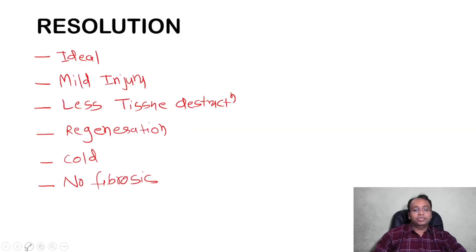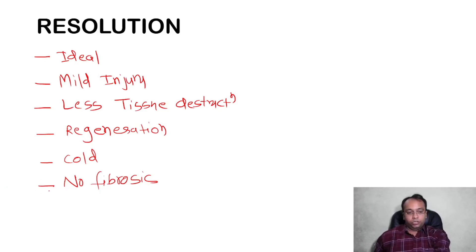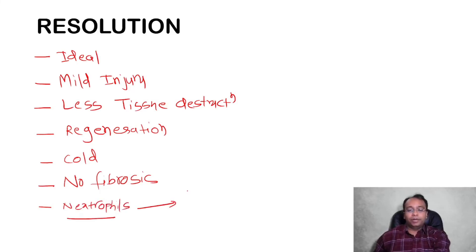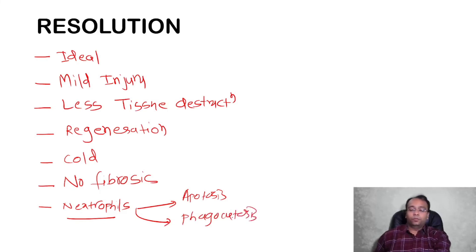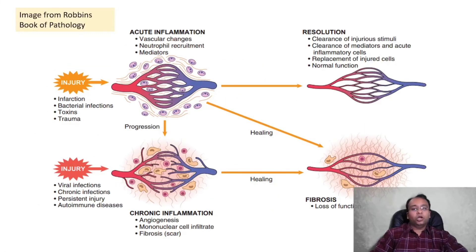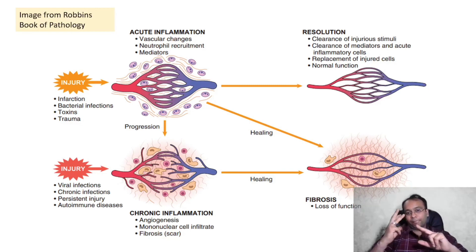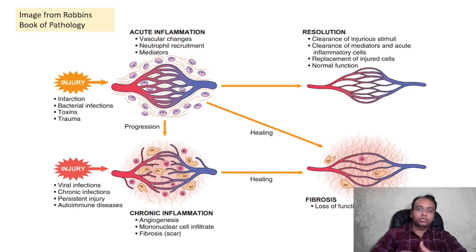In the resolution stage, neutrophils and other inflammatory cells, once they complete their function, will be removed either by apoptosis or by the process of phagocytosis. So that's all about the outcomes of acute inflammation: resolution, healing by fibrosis, and conversion to chronic inflammation.